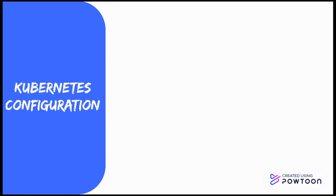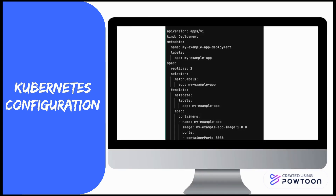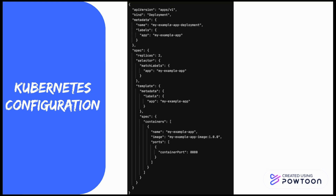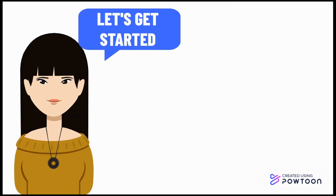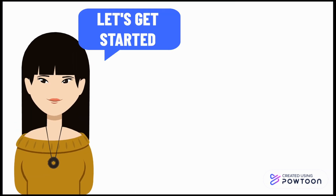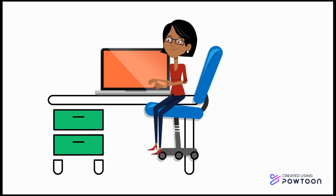To configure and create pods, services, and ingress, we can use a CLI such as kubectl or the UI dashboard via the API server. The configuration file should be in YAML format or JSON format. Now that we've discussed the basic concepts, let's move on to the demo.